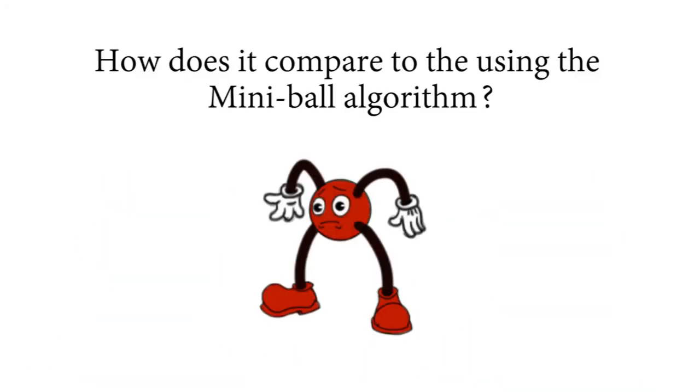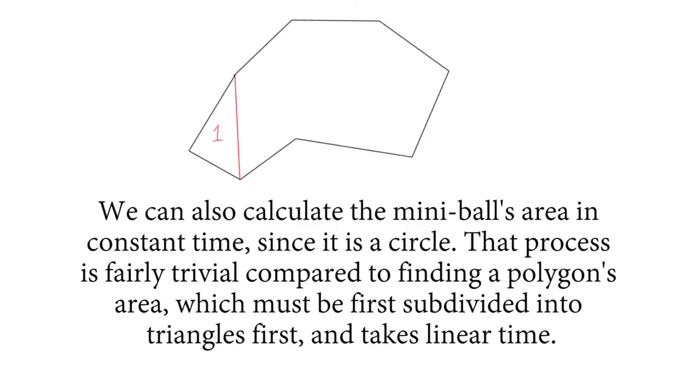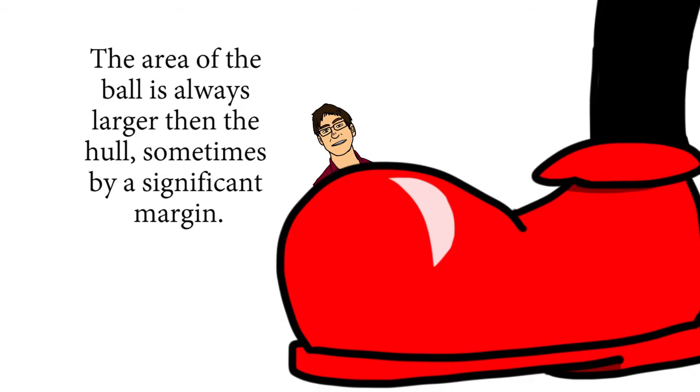How does it compare to using the miniball algorithm? While Timothy Chan's algorithm is fast, it is still slower than an enclosing ball whose time complexity is linear O(n). We can also calculate the miniball's area in constant time since it is a circle. That process is fairly trivial compared to finding the polygon's area, which must first be subdivided into triangles and takes linear time. But the area of the ball is always larger than a hull, sometimes by a significant margin.